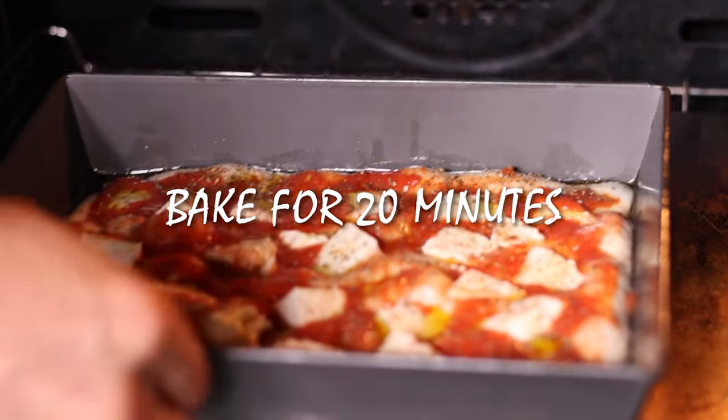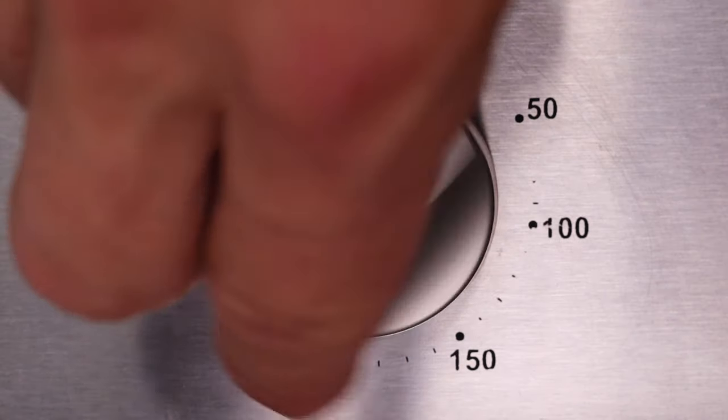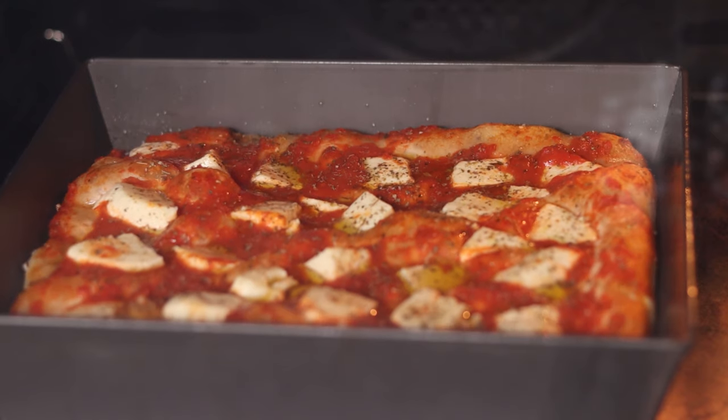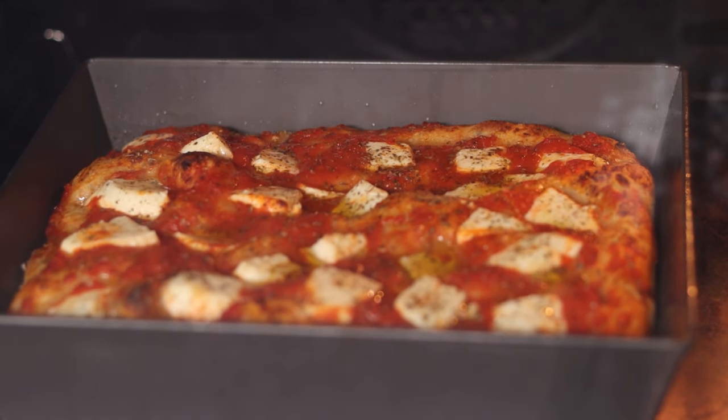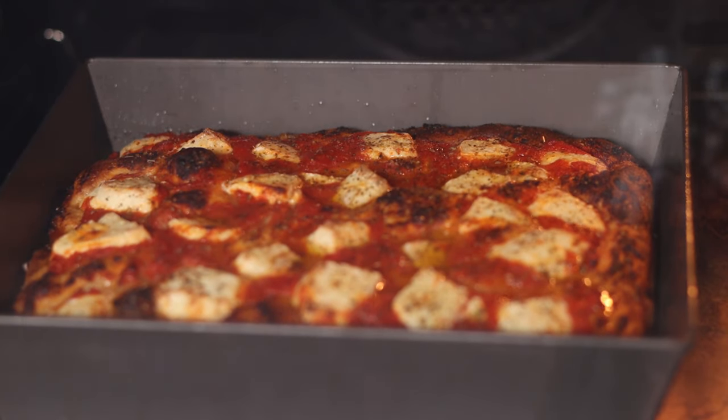It'll take around 20 minutes to bake. As soon as you close the oven door, turn the temperature down to 230 degrees Celsius or 440 degrees Fahrenheit. Once it has puffed up and nicely browned, it's ready. All you need to do now is be a little bit patient, leave it to cool down for five to 10 minutes, and then tuck in.